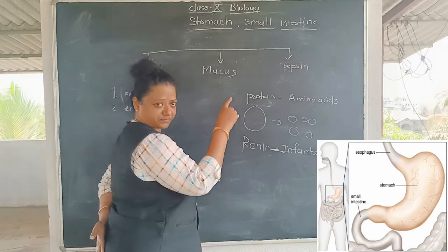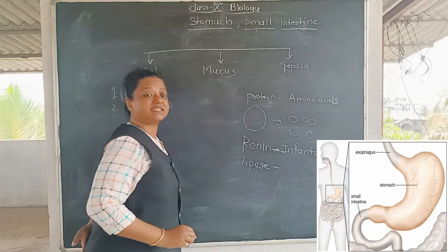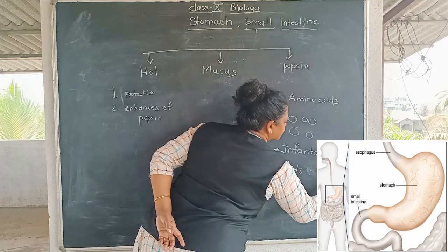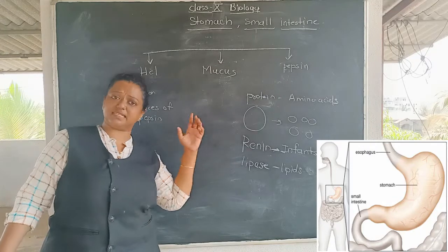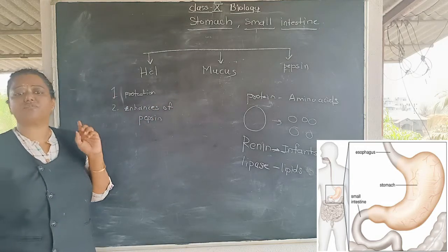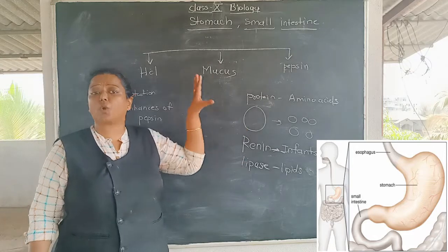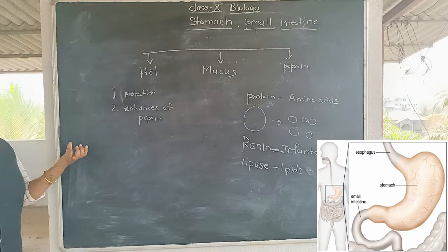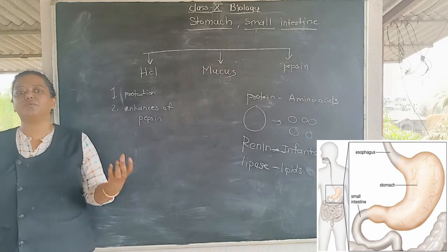One more thing secreted by the gastric glands is lipase, which is responsible for converting lipids into fatty acids. However, complete digestion of lipids does not take place in the stomach either — only partial digestion occurs. Large lipid molecules are converted into smaller molecules. The complete site of digestion is the small intestine, not the stomach, where only partial digestion takes place.